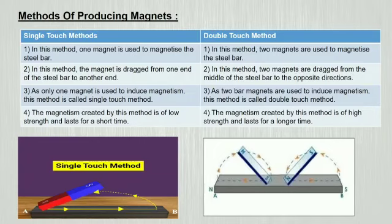Under single touch method, magnetism created by this method is of low strength and lasts for a short time. Whereas under double touch method, magnetism created by this method is of high strength and lasts for a longer time.